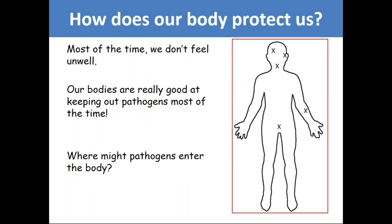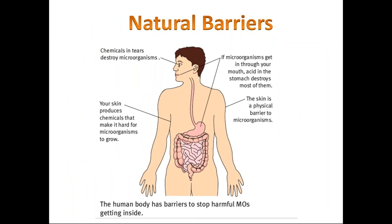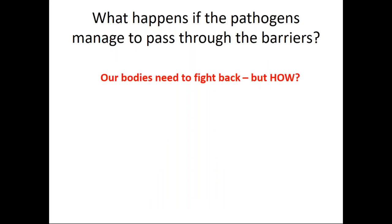How does our body protect us? Most of the time, our bodies are really good at keeping out pathogens. We have natural barriers, such as chemicals in tears which destroy microorganisms, and the skin is the best example of a natural barrier — it produces chemicals that make it hard for microorganisms to grow. If microorganisms get in through your mouth, the hydrochloric acid in the stomach will destroy most of them. The human body has these barriers to stop harmful microorganisms getting inside.